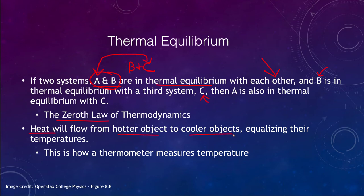Heat will always naturally flow from hotter objects to cooler objects, tending to equalize their temperatures. A hot cup of coffee left out will eventually cool down; a cold drink left out will eventually warm up. The temperatures are trying to equalize, and if left long enough they will essentially reach the same temperature.